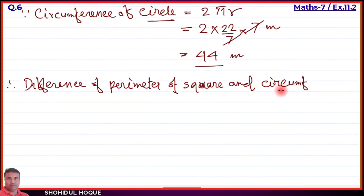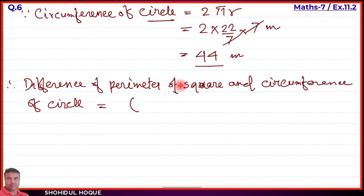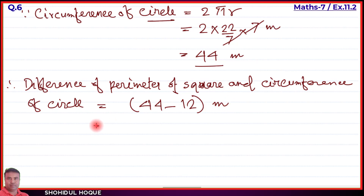Difference of perimeter of square and circumference of circle equals 44 minus 12, which gives 32 meters. So the answer to question number 6 is 32 meters. Now moving on to question number 7.